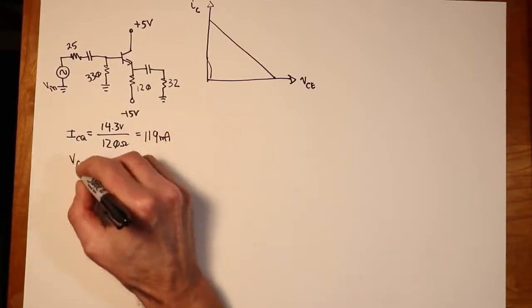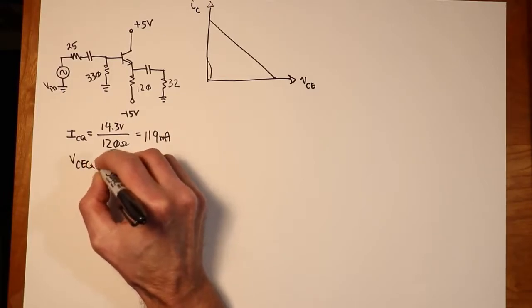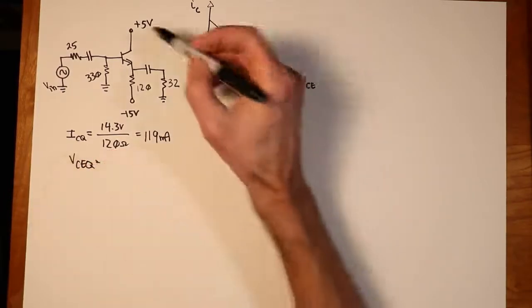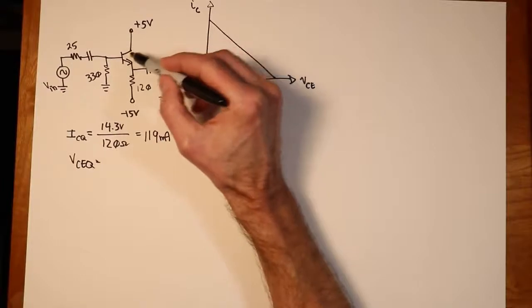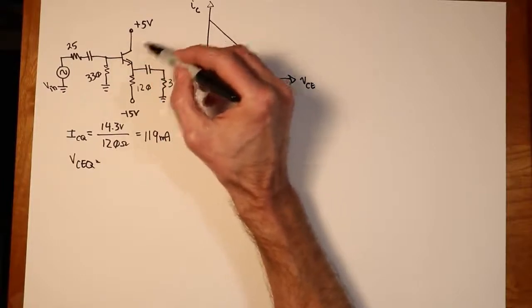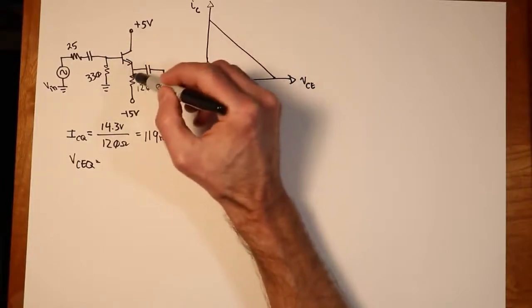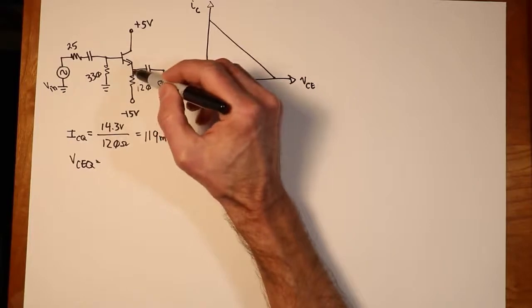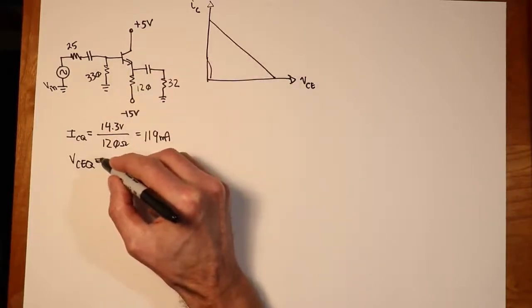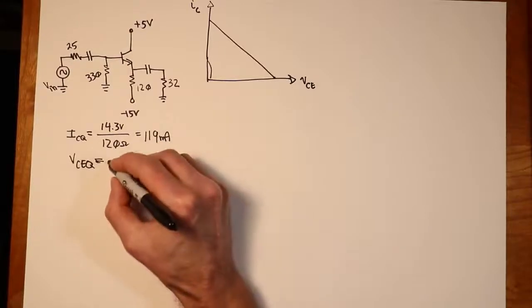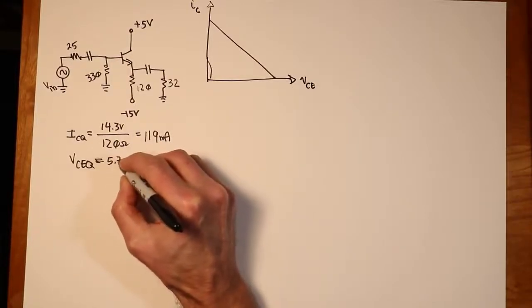Now, the VCEQ value we can get by inspection. We do not have a collector resistor. The collector goes right up to the 5 volt power supply. So VC is 5 volts. VE we approximated as minus 0.7. So VCEQ would be the difference, 5 minus a minus 0.7 or 5.7 volts.